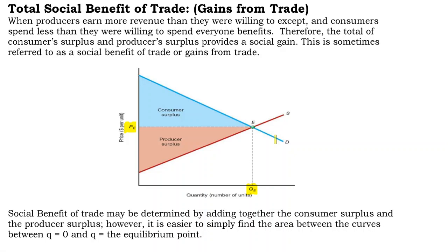Consumers are spending less money than they were willing to spend, so they are saving money. Producers are also benefiting because they are earning more revenue than they were willing to accept. They were willing to produce for less revenue, but they are gaining more revenue. So producer surplus is a positive thing. Consumer surplus is a positive thing. And so this is the total social benefit of trade, or sometimes referred to as the gains from trade.